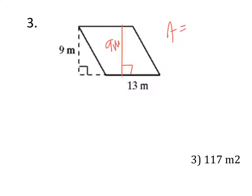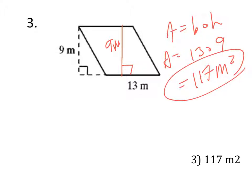So again, area is base times height, so area is 13 times 9, so that is 117, and that's meters squared. Another one for you in here, just go ahead and check it after you're done.